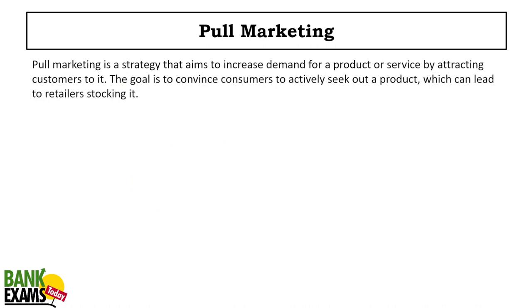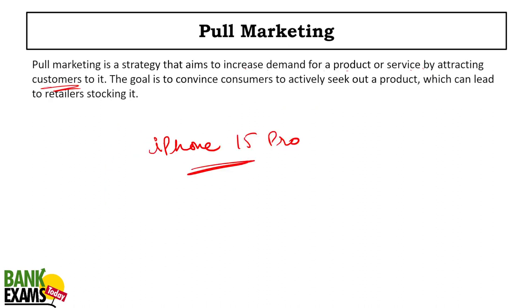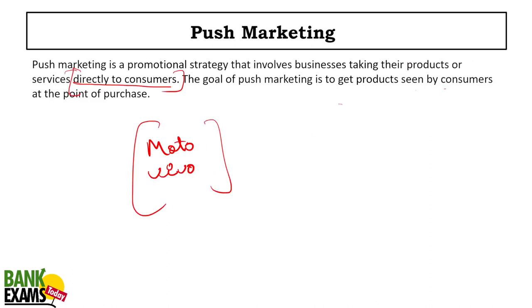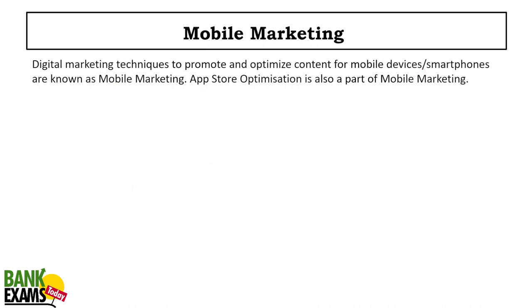Pull marketing is a strategy that aims to increase demand for products or services by attracting customers to them. For example, the iPhone 15 Pro has a huge hype without spending much on advertisements. That is pull marketing — you are attracting customers and they come to you. In push marketing you go to the customers; in pull marketing customers come to you.